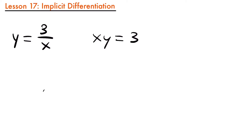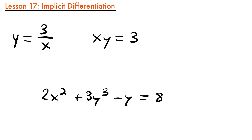For example, if we had the function 2x squared plus 3y cubed minus y equals 8, it's not going to be very easy to get this function in a form where we have y equals a bunch of terms of x. So it's going to be difficult to express this explicitly, and we're going to learn how to take a derivative of a function written in this implicit form.